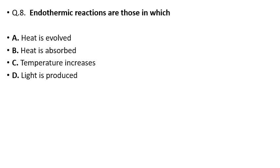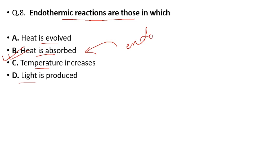Question number 8: Endothermic reactions are those in which — heat is evolved, heat is absorbed, temperature increases, or light is produced? The correct answer is option B: heat is absorbed. The reaction in which heat is absorbed is called endothermic, and the reaction in which heat is evolved is called exothermic. Remember: exo means heat evolved, endo means heat absorbed.